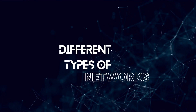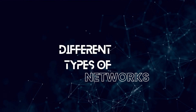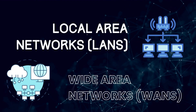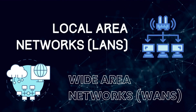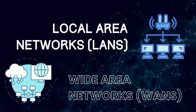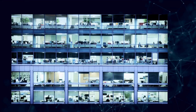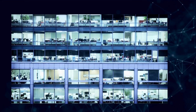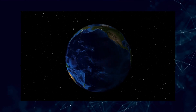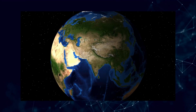Computer networks can be broadly classified into two main categories: local area networks, LANs, and wide area networks, WANs. These categories are based on the geographical area they cover. Here's a breakdown of the different types of networks.